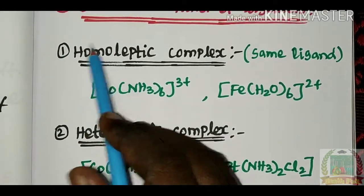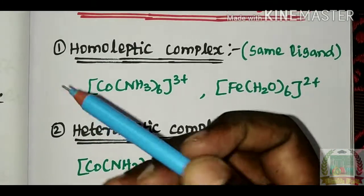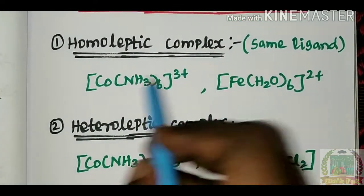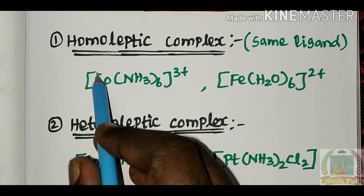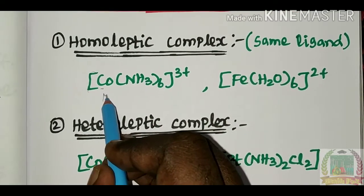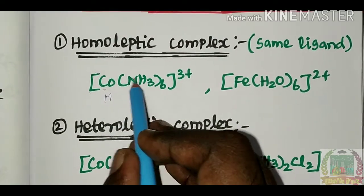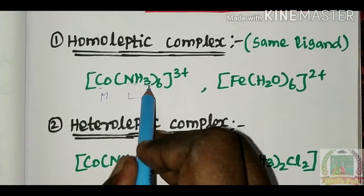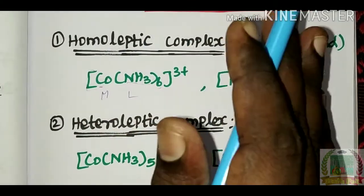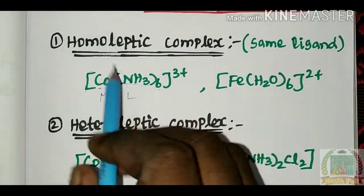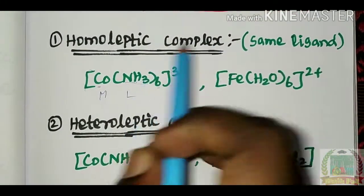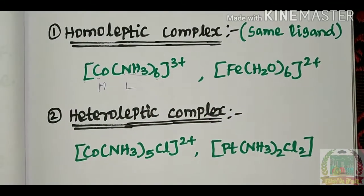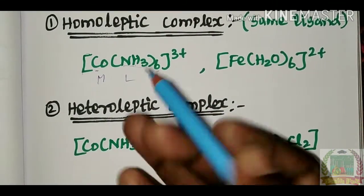It's very easy to remember. 'Homo' means the same, and 'hetero' means different. So if a complex has all the same type of ligands around the metal, it is a homoleptic complex. If the ligands are of different types, it is a heteroleptic complex.